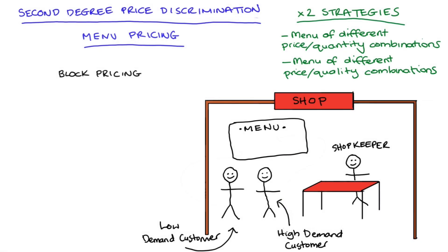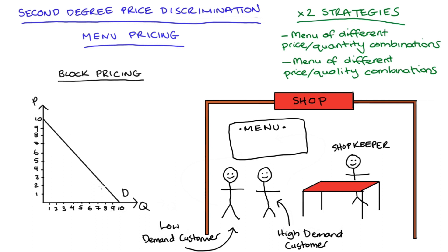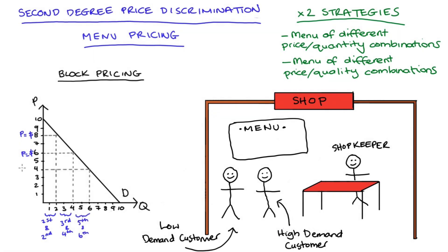Another way to offer quantity discounts similar to this is through what we call block pricing. Say we have a demand curve — if the firm block prices, they price along the curve, charging different prices for different quantity blocks. In our example, for the first two units we charge a fairly high price reading off the demand curve — say eight dollars. To incentivize those with the demand for it to consume the third and fourth units, we give them a discount — say six dollars per unit. And if they have the demand for it, we can get them to consume even more — the fifth and sixth units — by lowering the price for those units to four dollars per unit, again reading off the demand curve.